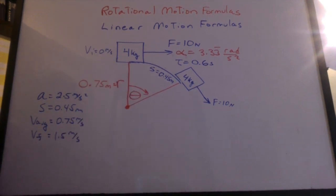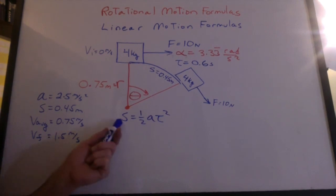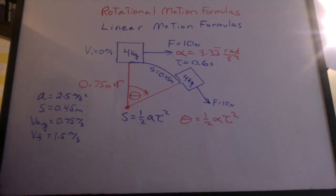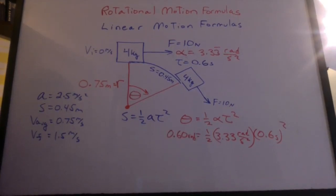Let's see how far it rotated. Just like we said distance equals 1 half a t squared, we can use the corresponding rotational formula to say theta equals 1 half alpha t squared. Plugging in the numbers, we get 0.60 radians.